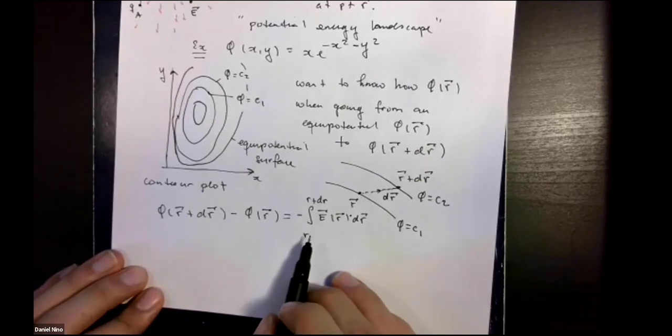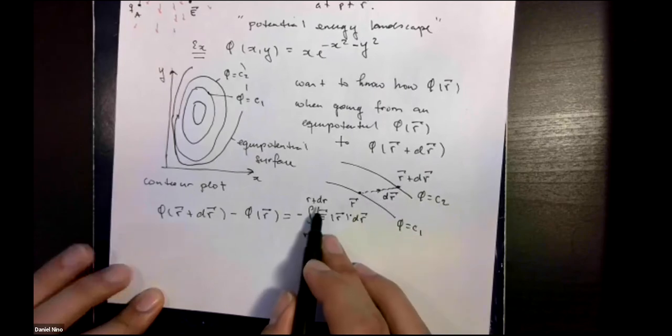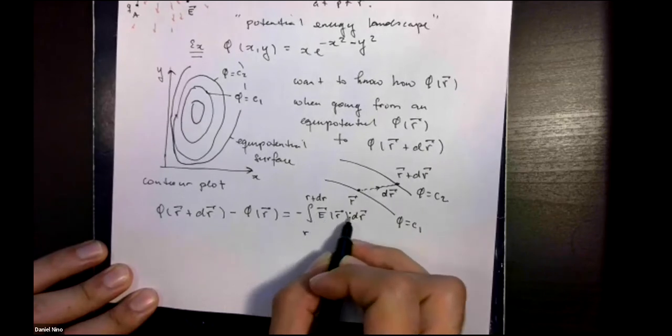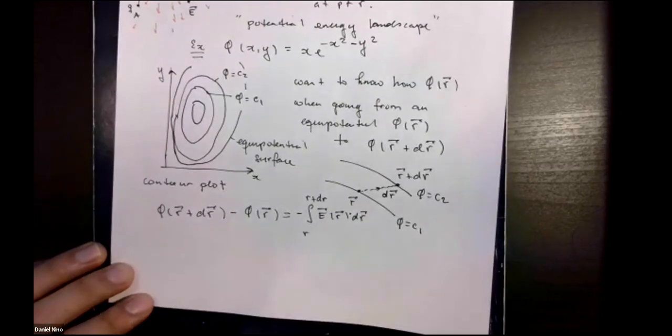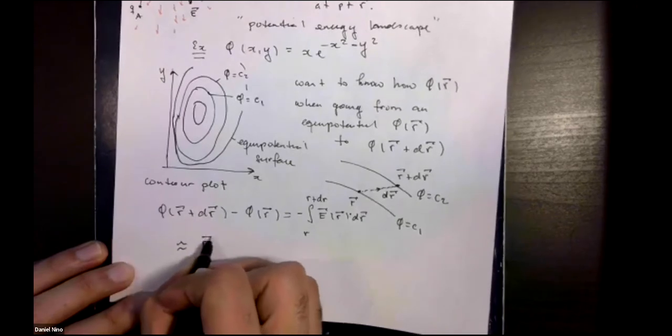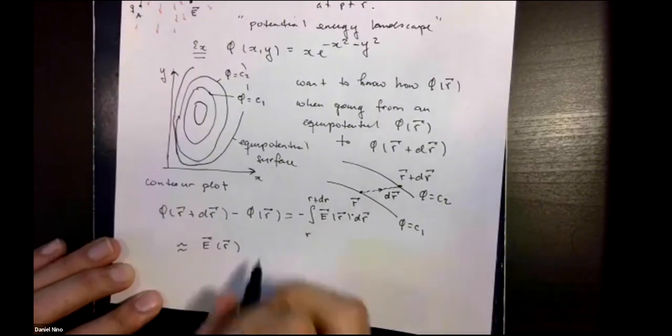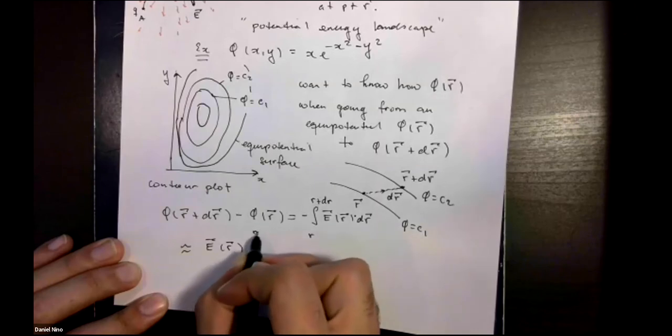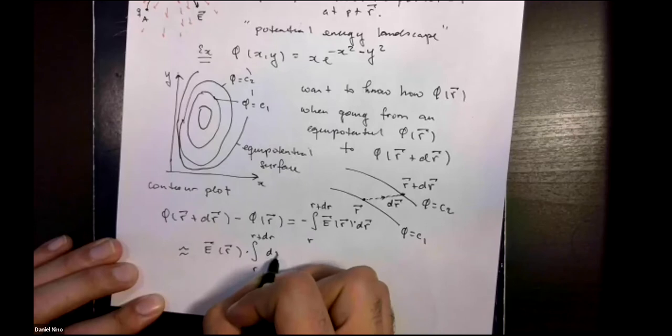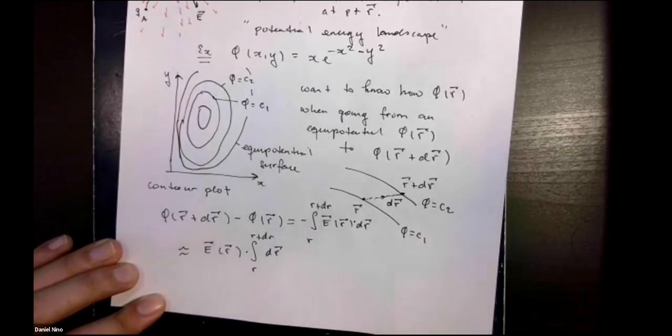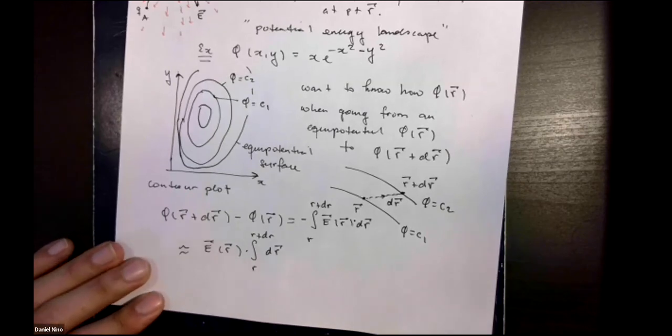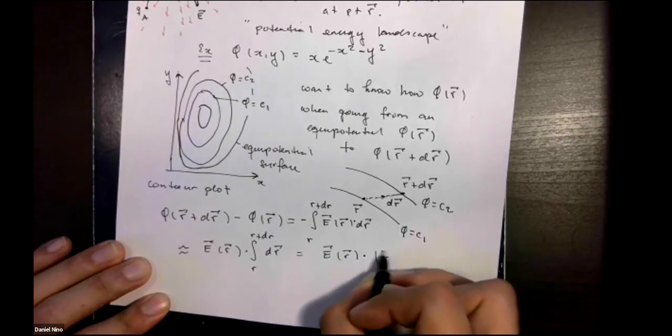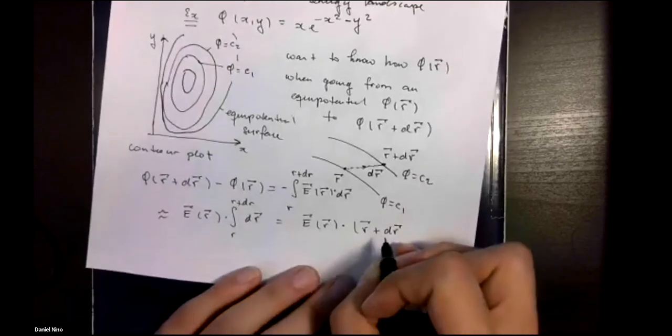And we're going to consider the case where these two equipotentials are extremely close together, so dr is extremely small. In that case, we can ignore any changes to the electric field along this path and treat it essentially as a constant. So that means that we can take out the electric field from the integral, and we're left with the following integral.